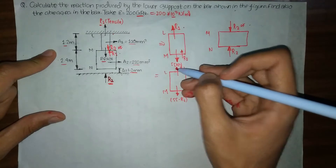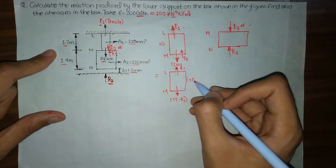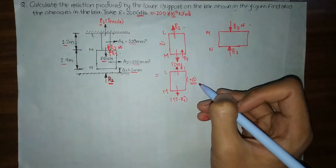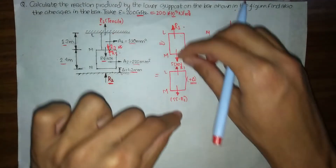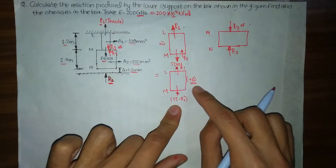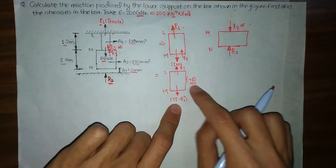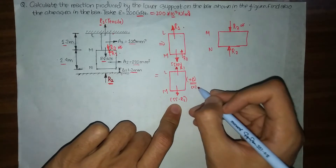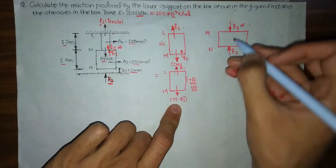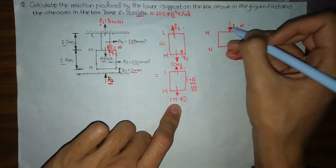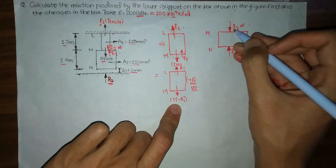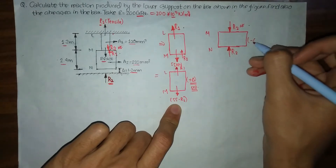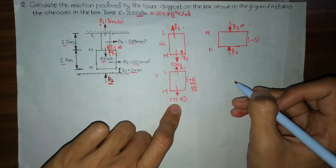As we can see, the nature of the force in LM is tensile, so we are going to have positive deflection — that is, extension, denoted by plus. In the MN section, we have a compressive reaction force R2 on both sides, so we are going to have compression, which is denoted as minus delta.